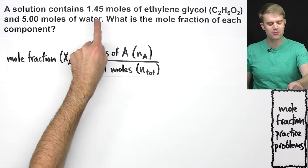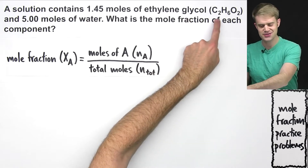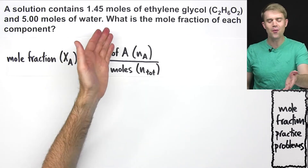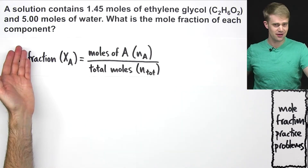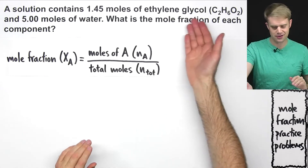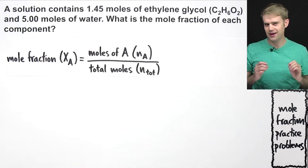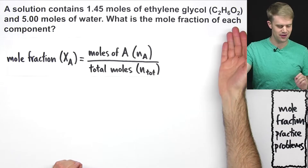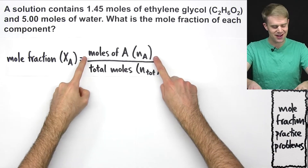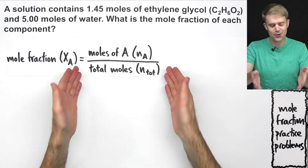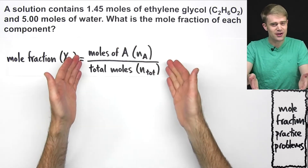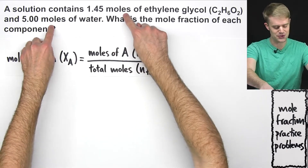A solution contains 1.45 moles of ethylene glycol, C2H6O2, and 5.00 moles of water. What is the mole fraction of each component? There are two components here: ethylene glycol and water. We'll need to calculate the mole fraction of each one using this equation. We'll need to know the moles of the specific component as well as the total number of moles in the solution. Both of these values are given in moles, so we can plug them directly into the equation.